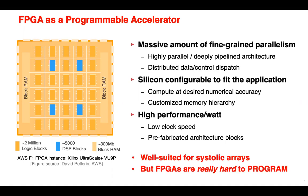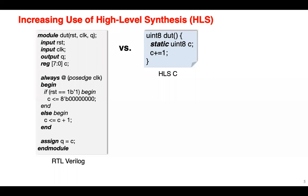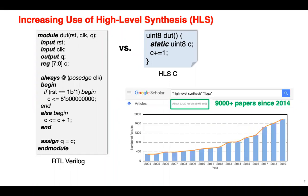But FPGAs are really hard to program. For example, if you want to implement an 8-bit counter in RTL code, you need to write around 20 lines of code. But with the introduction of high-level synthesis, or HLS, we only need to write four lines of code. And if we search high-level synthesis and FPGA on Google Scholar, you can see an increasing trend — now we have around more than 9,000 papers since 2014.